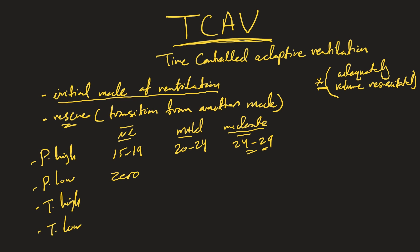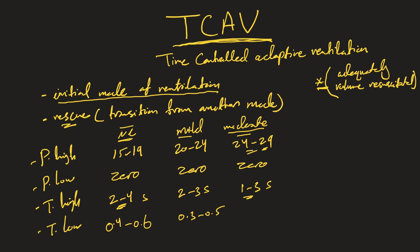P-low is zero for all — in the next video I'll explain why you want to keep it at zero. For T-high: normal lungs use 2–4 seconds, mild uses 2–3 seconds, and moderate uses 1–3 seconds. This is related to lung compliance. For T-low: normal lungs use 0.4–0.6 seconds, mild uses 0.3–0.5 seconds, and moderate uses 0.2–0.4 seconds, plus FiO2 and respiratory rate.